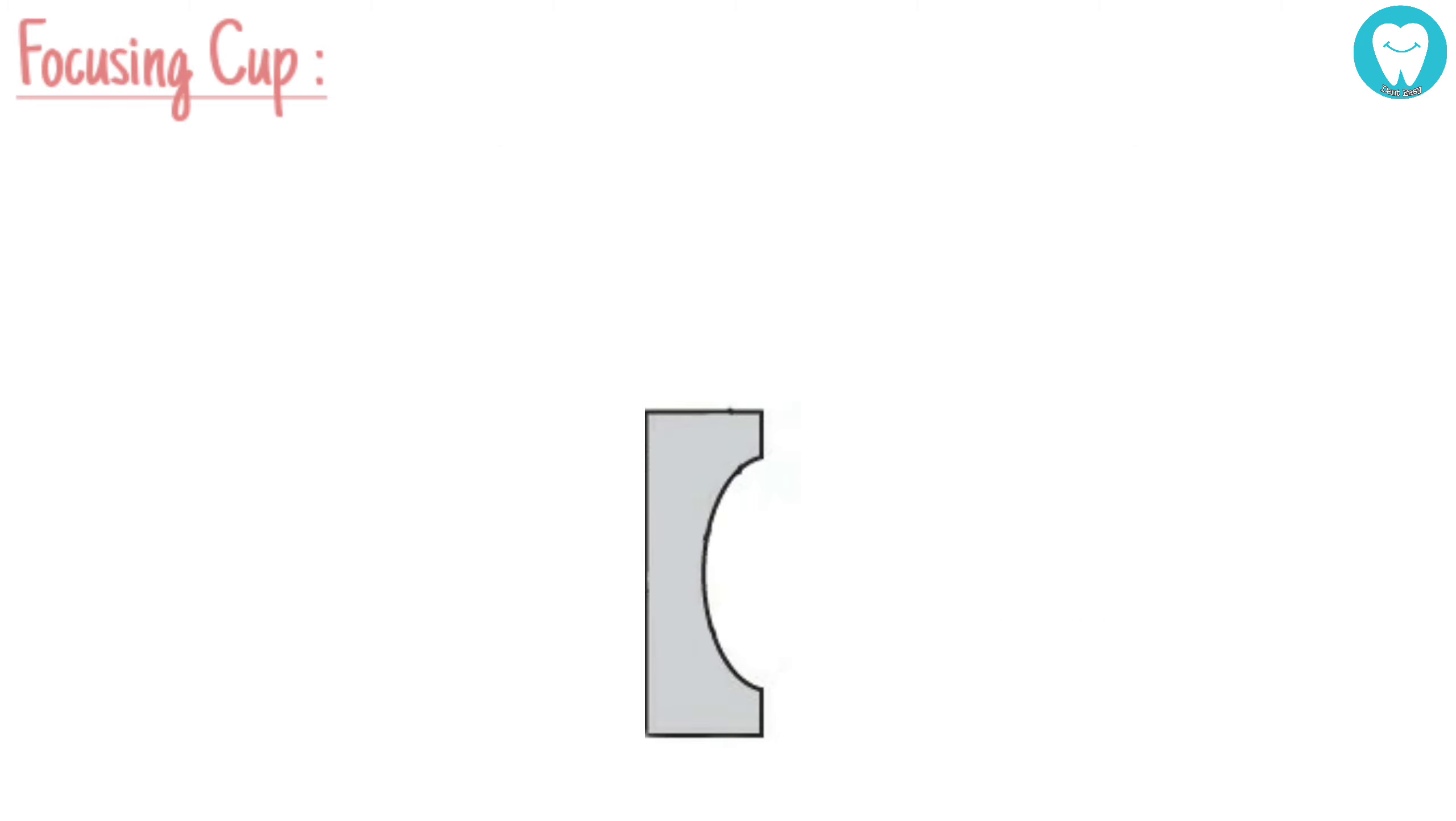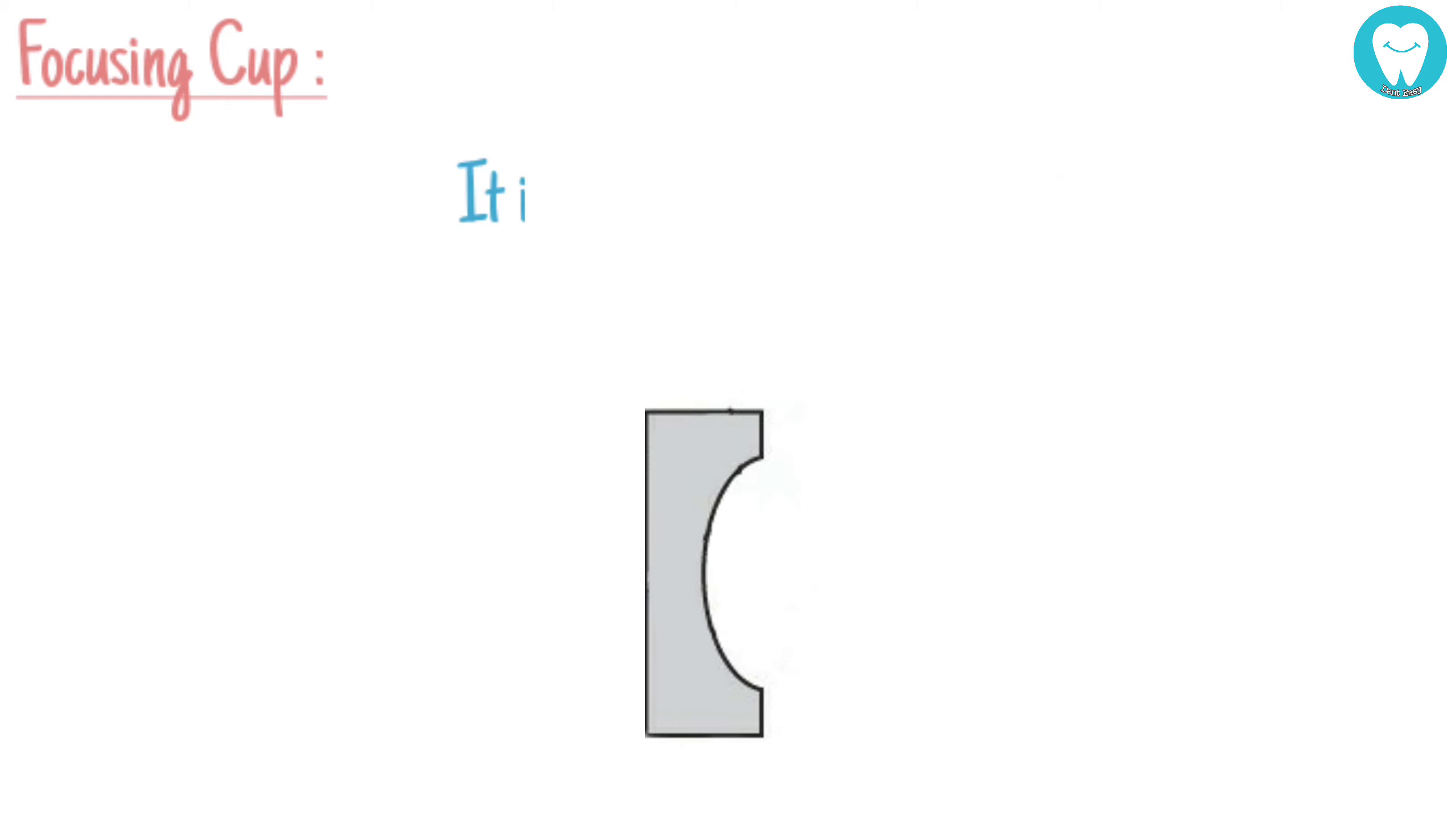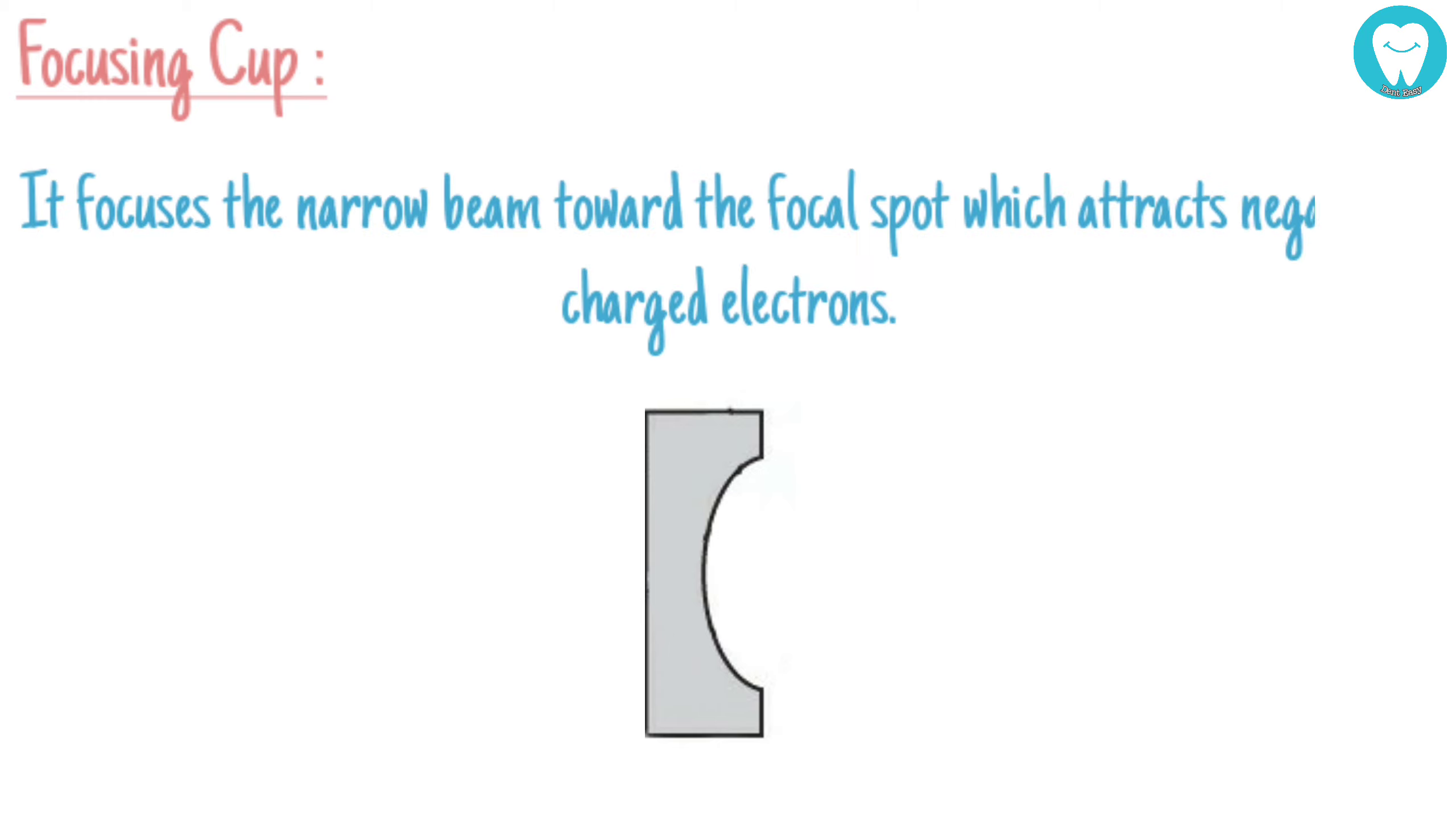The filament is shaped in a slot called the focusing cup, cut into the surrounding metal housing. It is made of molybdenum. It is a negatively charged concave reflector cup that focuses the narrow beam toward the focal spot, which attracts negatively charged electrons.